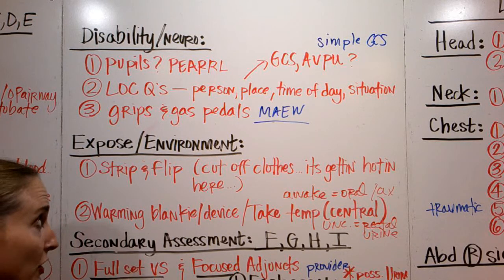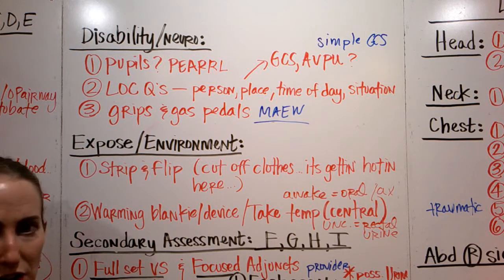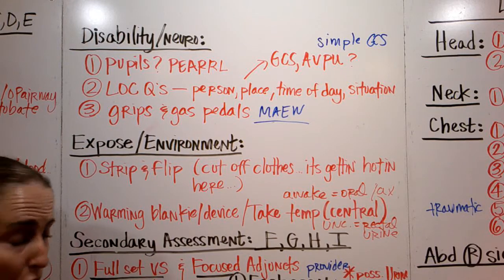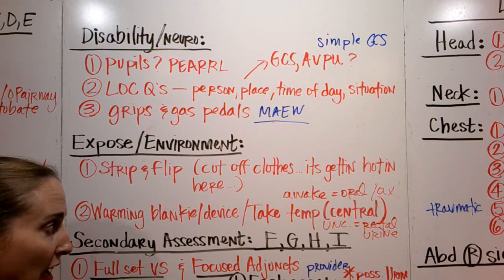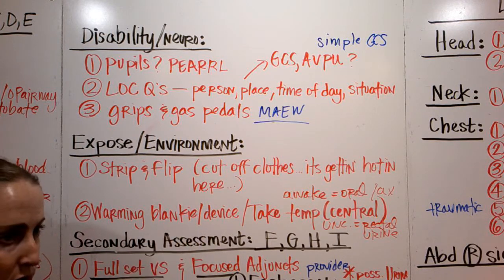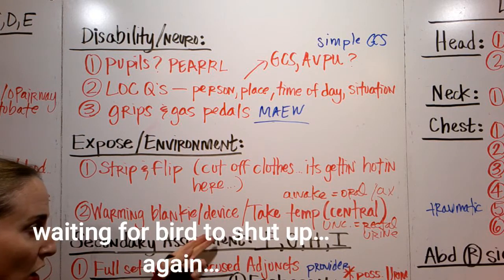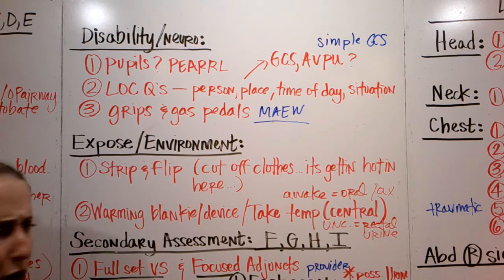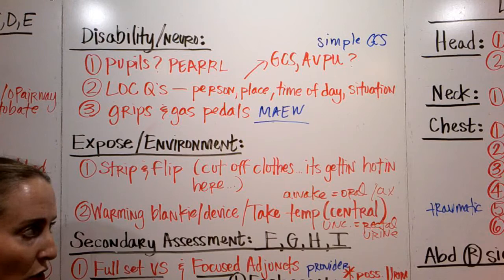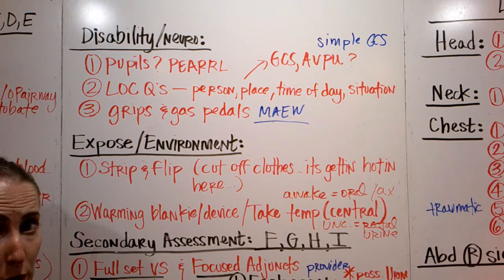Expose and environment: strip them and flip them, cut off their clothes if they haven't already been cut off — that's usually one of the first things ER techs do for a trauma patient. Put some blankets on them — we made them naked, now we have to cover them. Make sure we have warming devices: a warming blanket, an Arctic Sun, a Bear Hugger, whatever you've got. Take their temperature centrally: oral or axillary if they're awake — oral is preferable; rectal if they're unconscious; or continuously via Foley if one is placed.